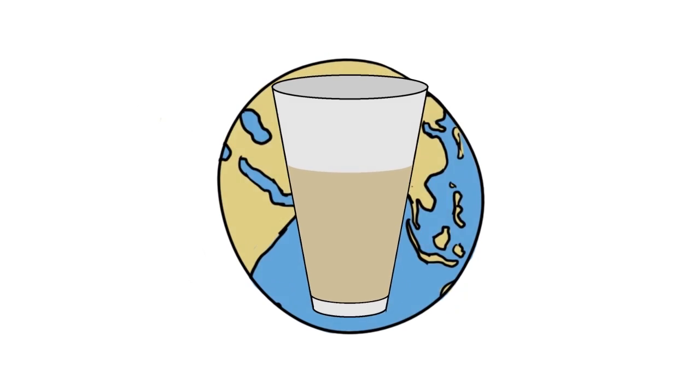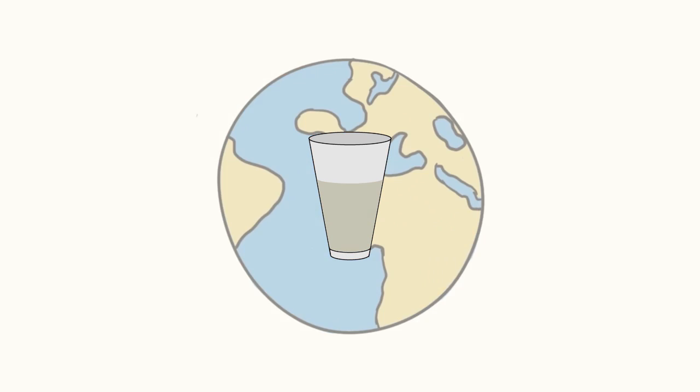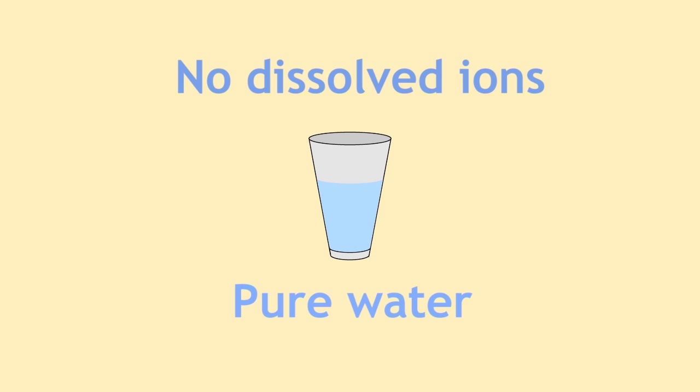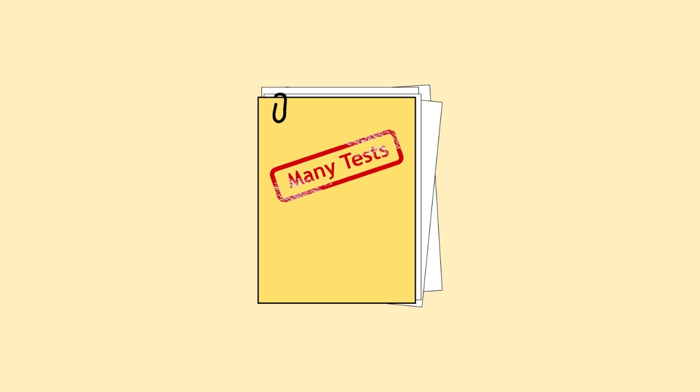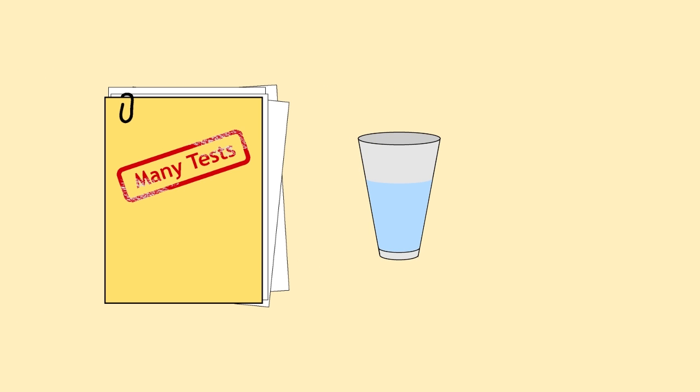Water impurity is a very big environmental concern. Pure water contains no dissolved ions, and many tests have been devised to determine the presence of ions in a sample of water.